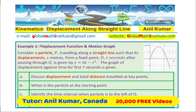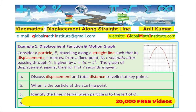Example 1 is related to displacement function and motion graph. Consider a particle P traveling along a straight line such that its displacement s meters from a fixed point O, t seconds after passing through O, is given by s equals 6t minus t squared. The graph of displacement against time for the first 7 seconds is given to you. The idea is to understand the concept of displacement and distance traveled.